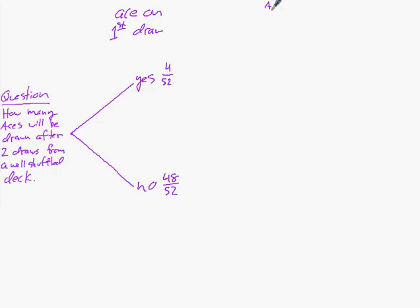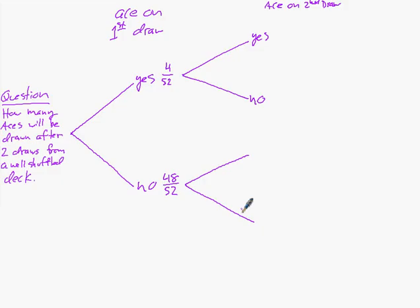Now we have ace on second draw — yes or no. If there was no ace drawn on the first, the second could also be ace or no ace. The important part is that the probabilities for these will be different depending on what happens in the beginning. If an ace was drawn first, there are only three aces left out of the 51. But if no ace was drawn, then that would be four out of 51.